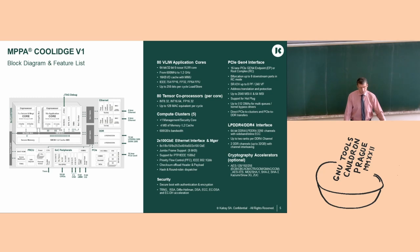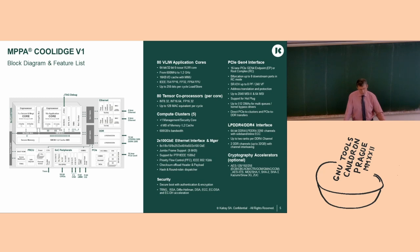The 80 cores are dispatched into five compute units that we call clusters. Each compute unit has 16 application cores and 16 co-processors. The system runs between 600 MHz and 1.2 GHz. This is our third generation — generation C — of MPPA, the line of massive parallel architecture of Calray, called MPPA Coolidge.